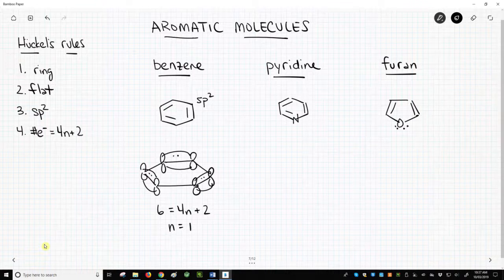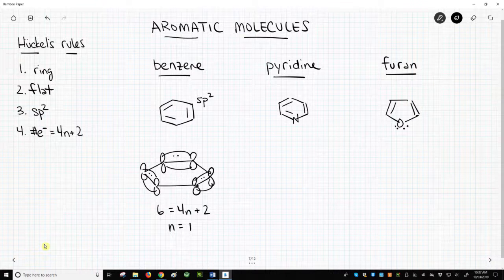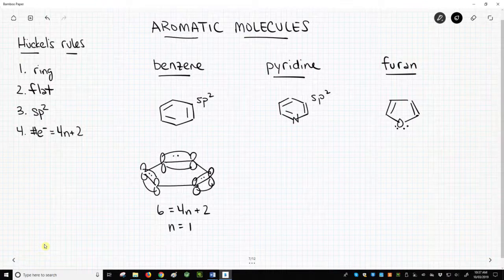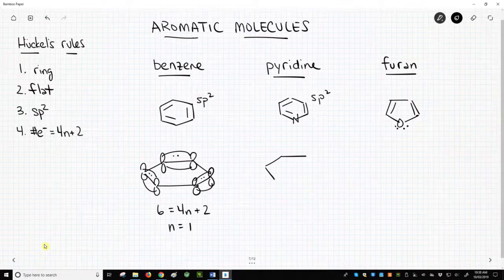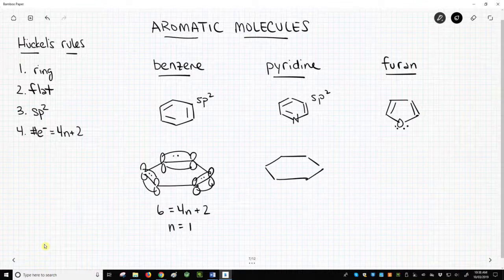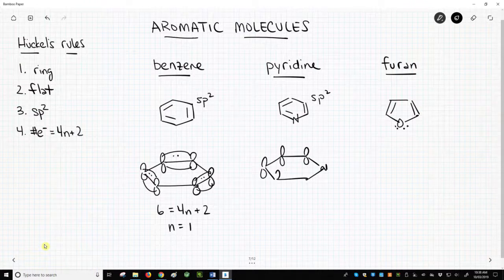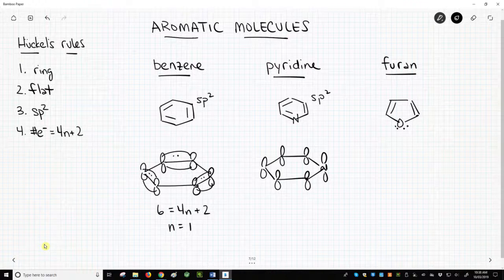Example 2. Pyridine. Pyridine has a ring. It is flat. All atoms are sp2, so all atoms in the ring have a p orbital. Let's draw the structure again. We'll try to draw it flat. There's our nitrogen. Our p orbitals are perpendicular to the plane.